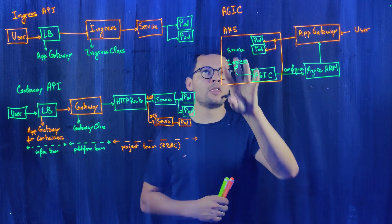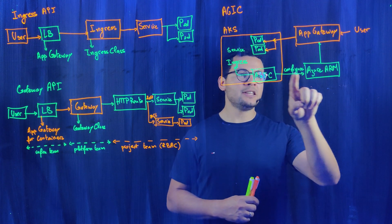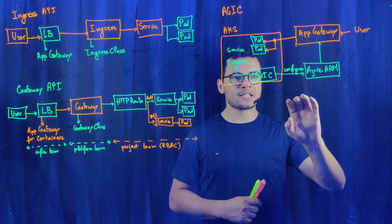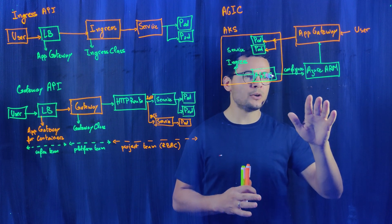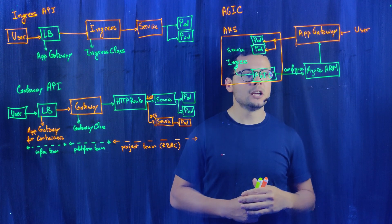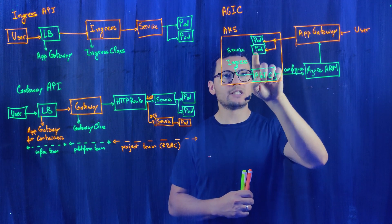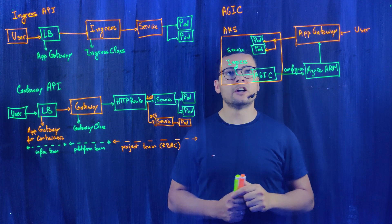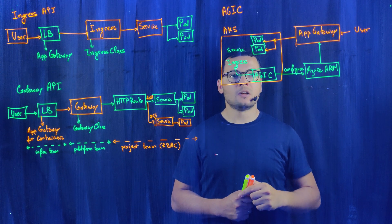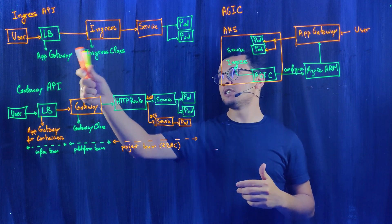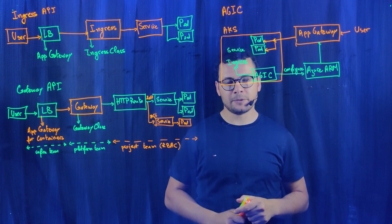The issue with AGIC is that updating the Application Gateway takes a lot of time — about 30 seconds to update the new listeners and the new IP addresses for the pods. A second issue is that it only supports Ingress and does not support the Gateway API.